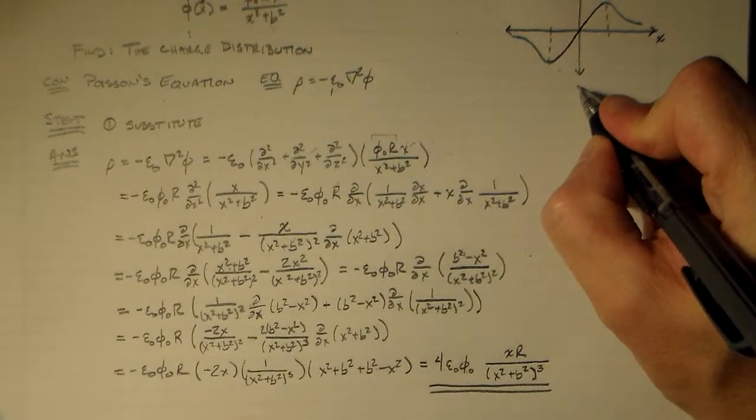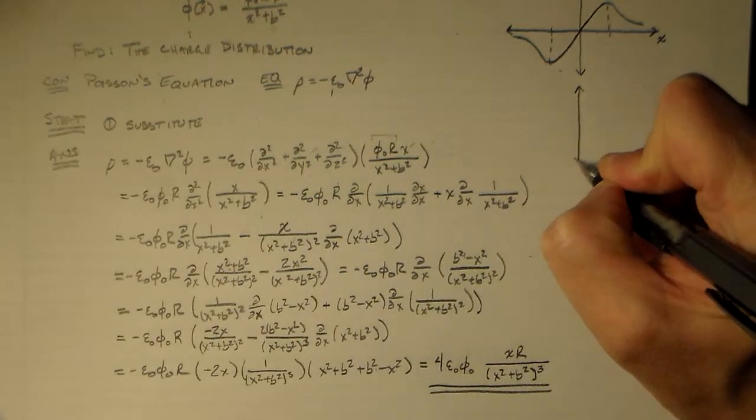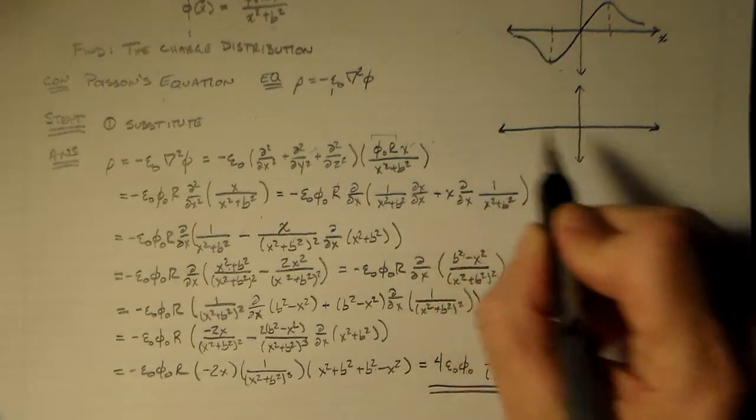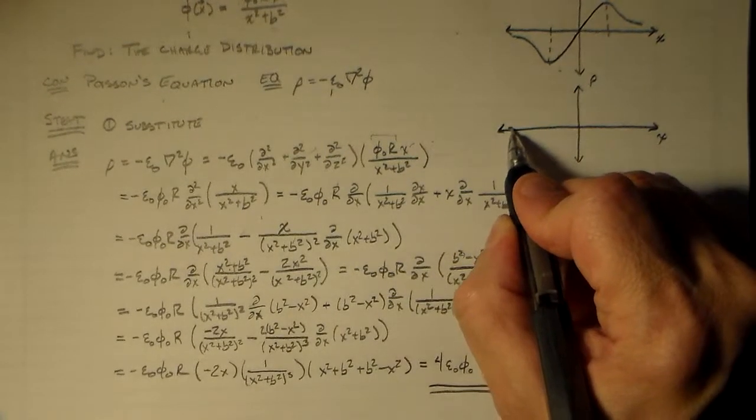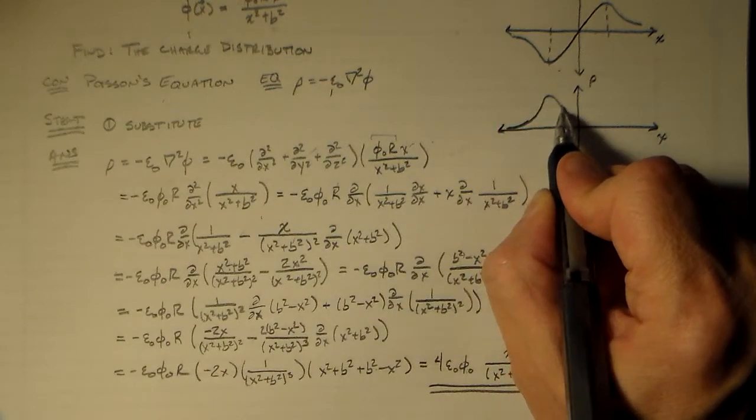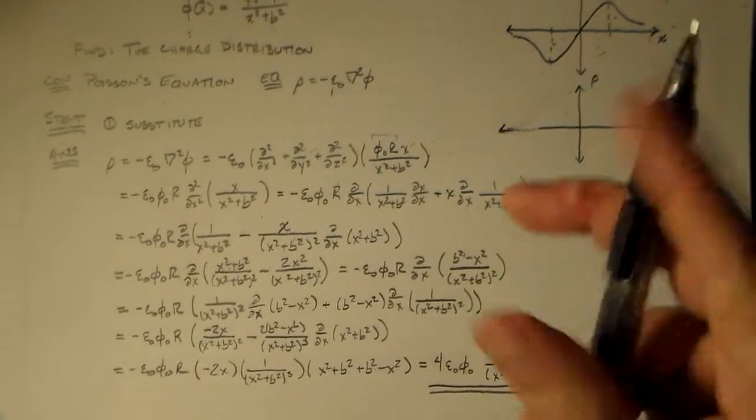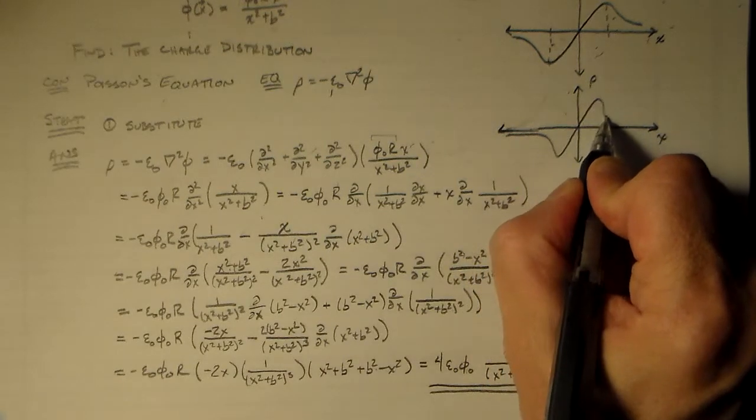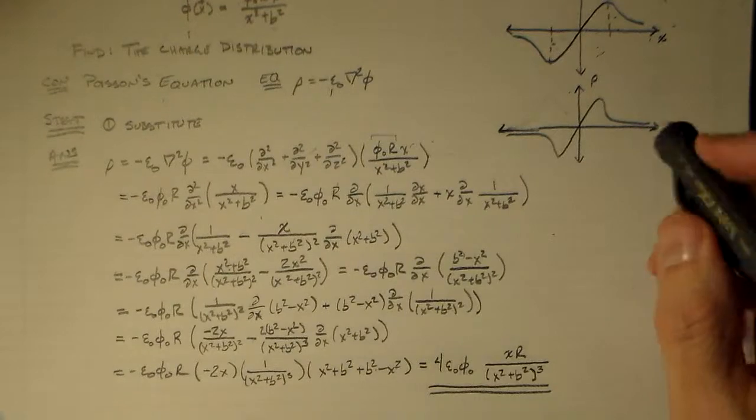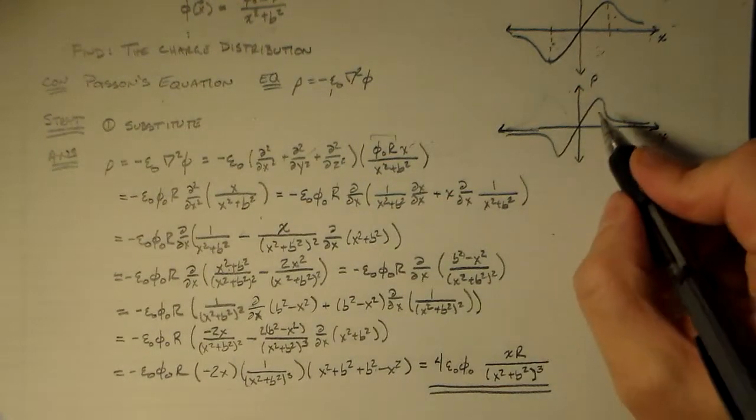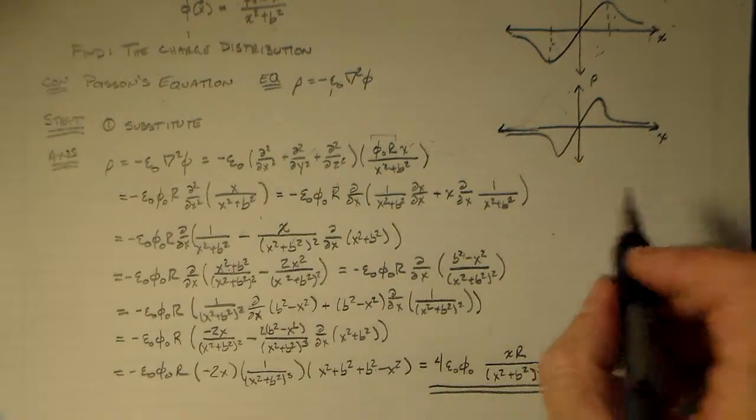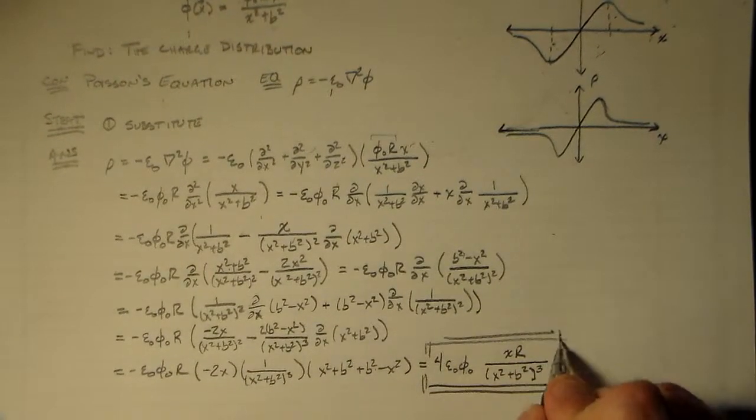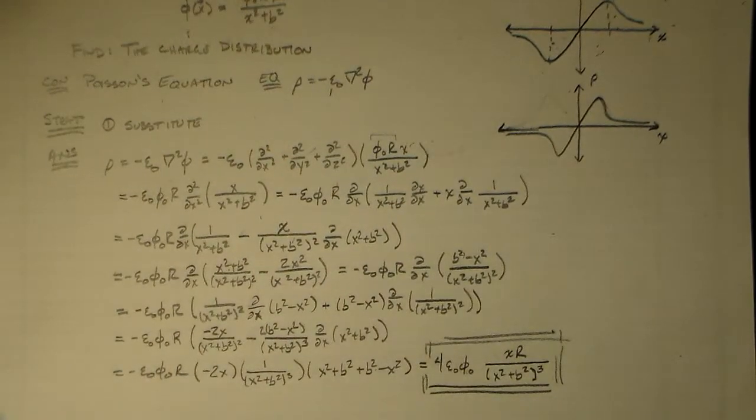Which looks a lot like this guy only more so. Actually I think these peaks are going to be at a slightly different location. And they're definitely going to drop faster. Same sign. We ended up with the same sign. So we get something like that, steeper, slightly different position for these peaks. And that is basically the charge distribution using Poisson's equation from a potential. I will see you next time. Bye now.